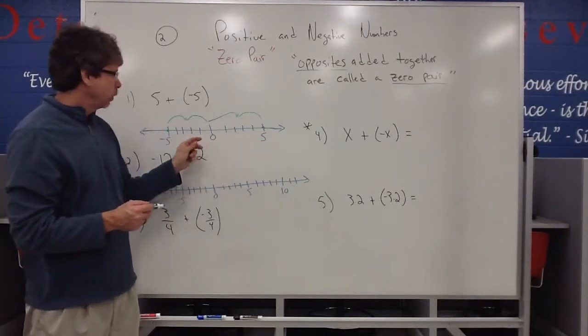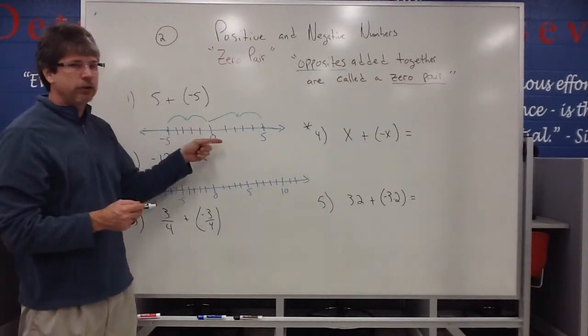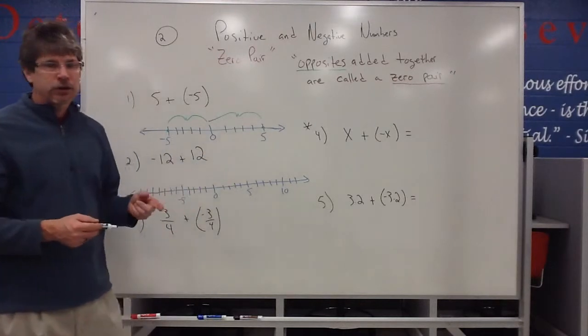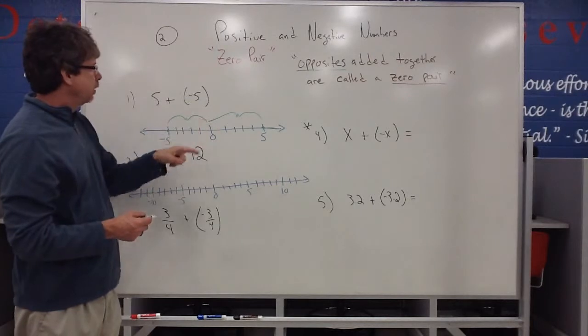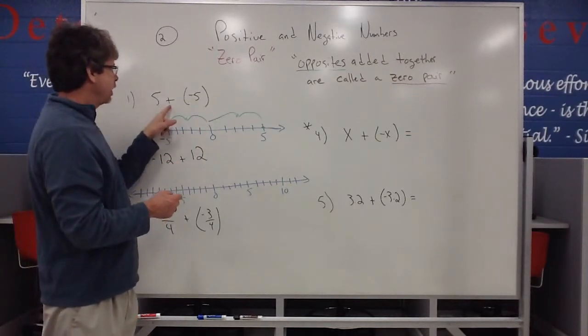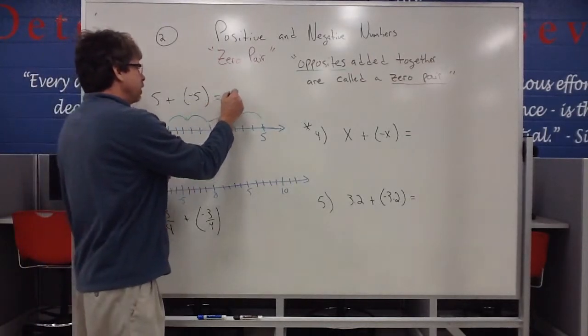We call this a positive direction and this a negative direction. But essentially, you still move the same amount, just in a different direction. When you do this, we call this a zero pair when you add them together. So five and a negative five, that's actually going to end up equaling zero.